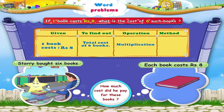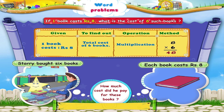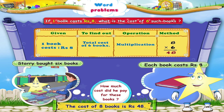We have to multiply rupees 8, which is the price of one book, by 6, which is the number of books. So, Starry, we had to pay rupees 48 for the 6 books that we bought. Wasn't that easy?